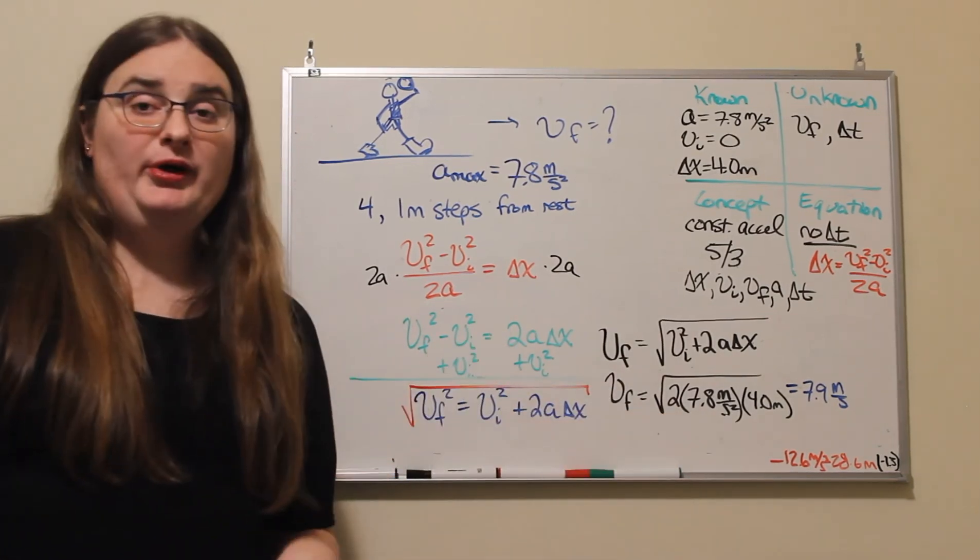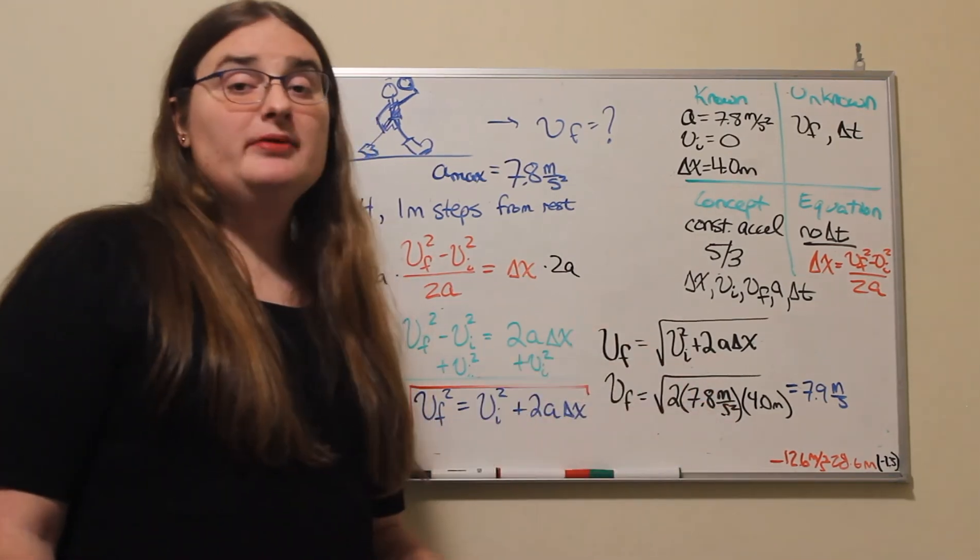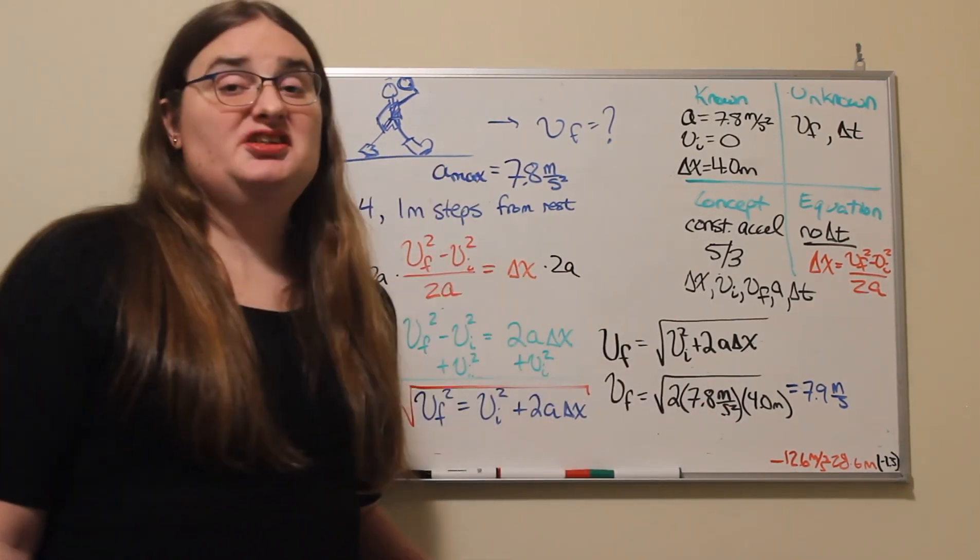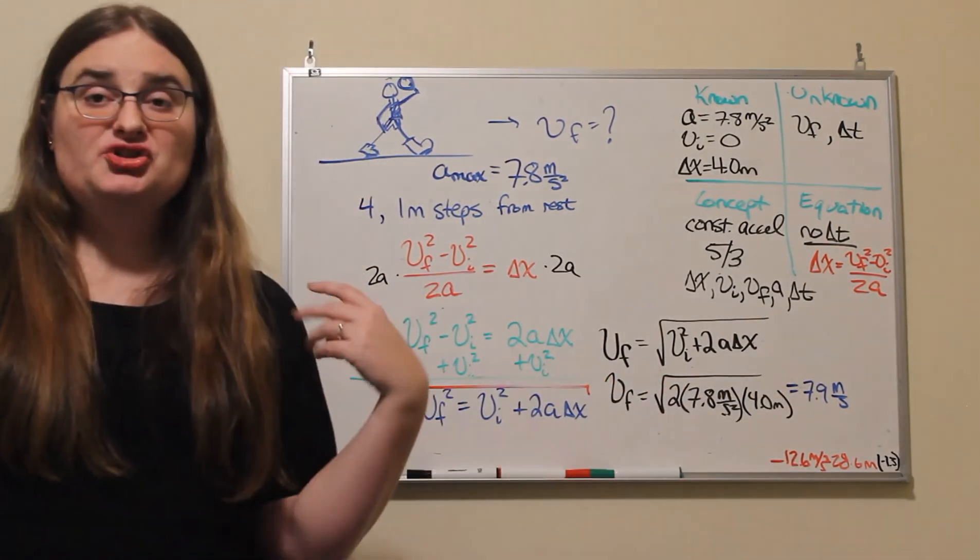Now, if I take 2 times 7.8 times 4, I get just under 63, and the square root of that to two significant digits is going to give me 7.9 meters per second.